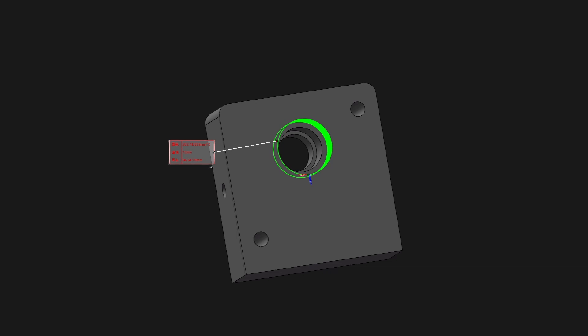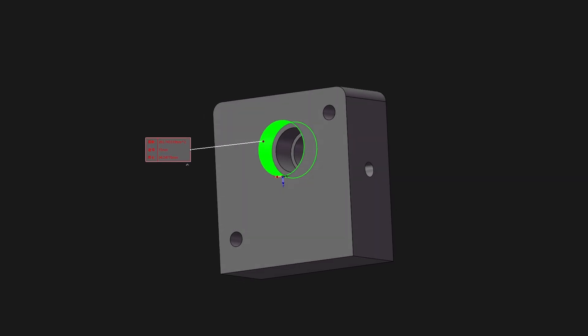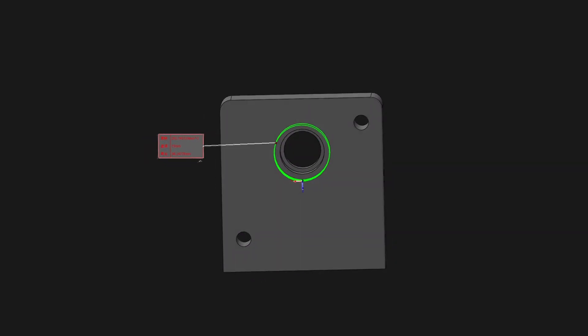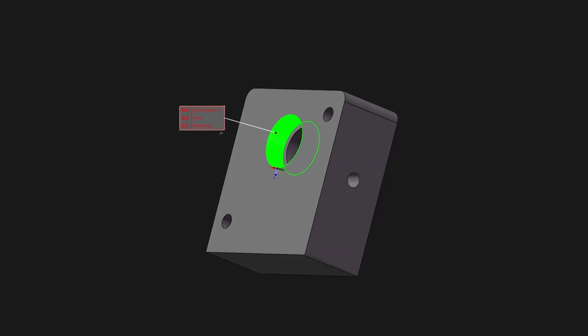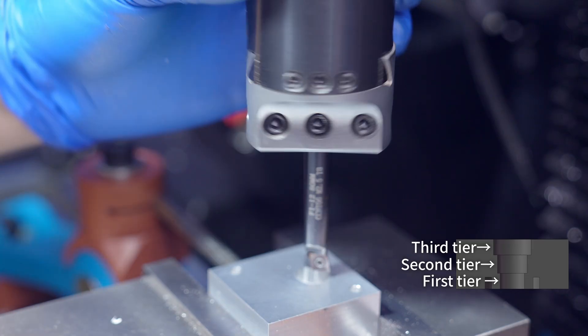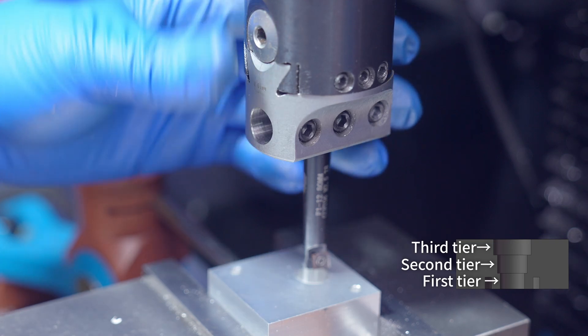The third tier of this bore has a diameter of 15mm and is for the oil seal, which requires a good surface finish. So, I switched to a boring bar for this step.